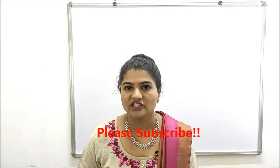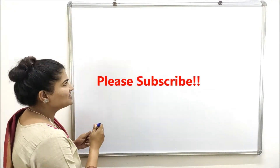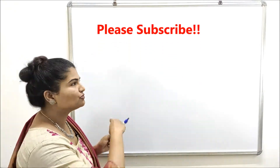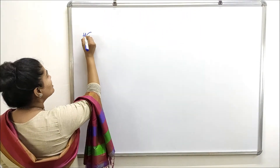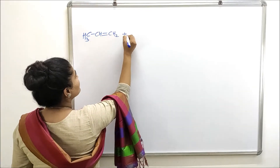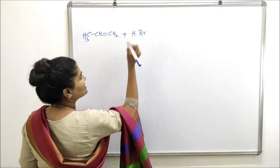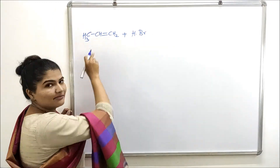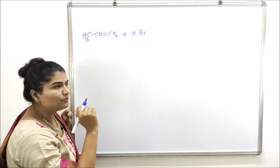Hello and welcome back to BeFamaWise. Today we are going to discuss anti-Markovnikov addition, also called the peroxide effect or Kharash effect. In the last video we discussed Markovnikov's rule. What happens when Markovnikov's rule applies is when you add an unsymmetrical reagent like HBr to an unsymmetrical alkene like propene.